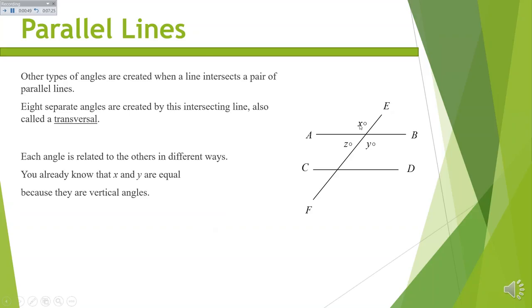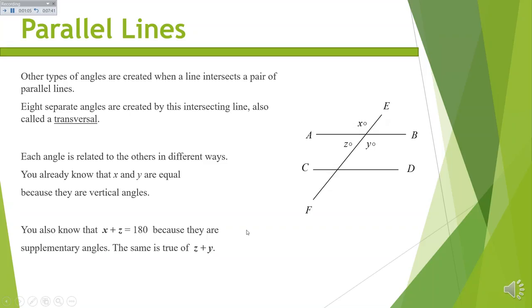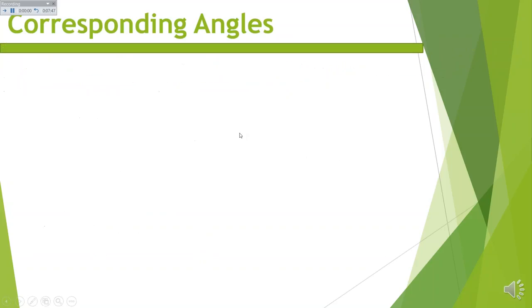Here we have X and Y — those are vertical angles. Z and Y are supplementary angles — there's our straight line. X and Z are supplementary angles — there's our straight line. We could add different things together and find out different things.